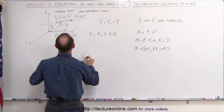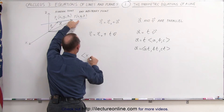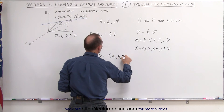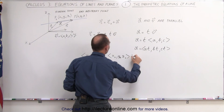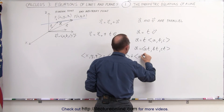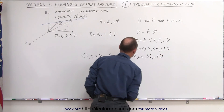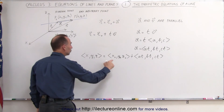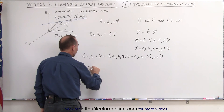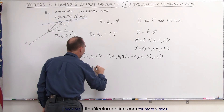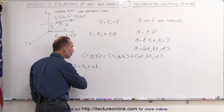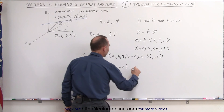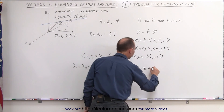The r vector can be written out as: the r vector equal to (x, y, z) is equal to the r sub naught vector (x sub naught, y sub naught, z sub naught) plus t times the v vector (at, bt, ct). This means we can take each of the three components and write: x equals x sub naught plus a·t, y equals y sub naught plus b·t, and z equals z sub naught plus c·t. Here t is the parameter.